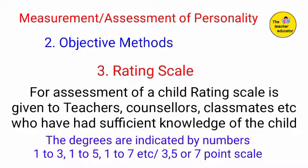Usually, the degrees in the rating scale are indicated by numbers 1 to 3, 1 to 5, or 1 to 7, comprising 3-point, 5-point, and 7-point scales. There are different types of rating scales — 3-point, 5-point, 7-point — depending on the requirement.